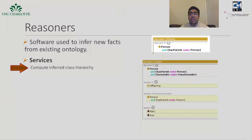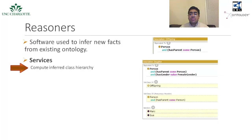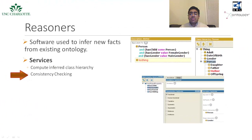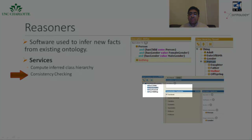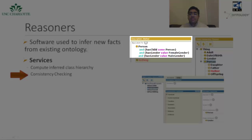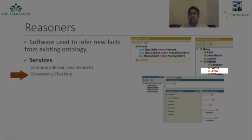The class offspring is defined as a person having a parent of some other person. Based upon the definition of offspring and that of the class daughter, the reasoner infers that daughter is a subclass of offspring. Another standard service offered by reasoners is consistency checking. Based on the description of a class, the reasoner can check whether or not it is possible for the class to have any instances. A class is deemed inconsistent if it cannot possibly have any instances. In the example here, the property has gender is defined as functional, implying that any instance of person can have only one gender. Then we have deliberately defined the class mother to have both male and female gender, which is captured by the reasoner as inconsistent, and the class is shown as red reflecting inconsistencies.